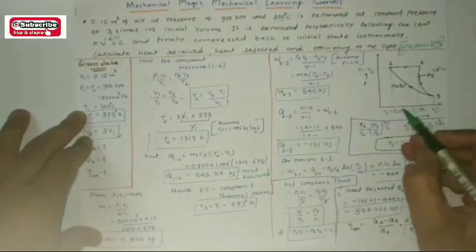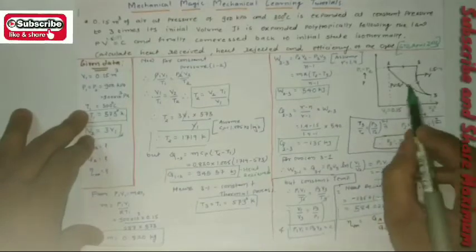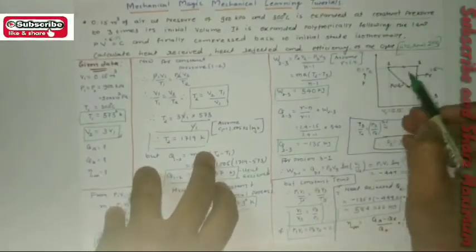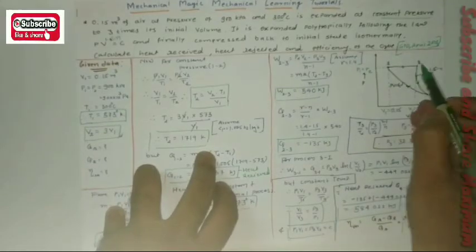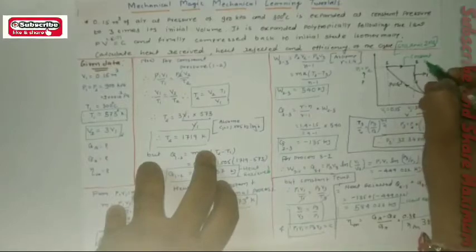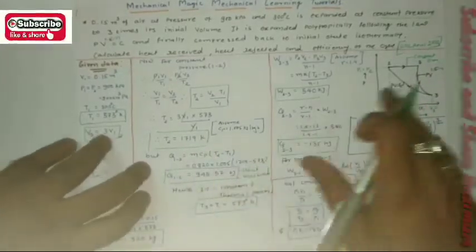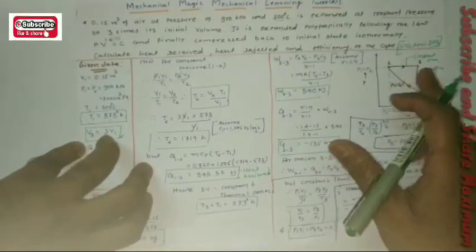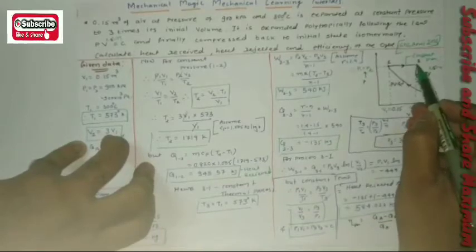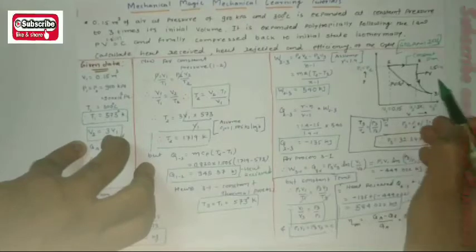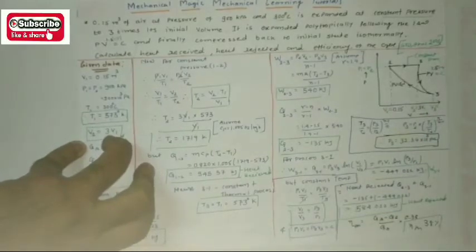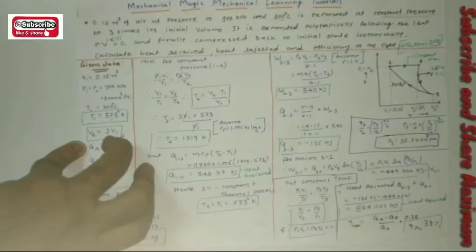Looking at the PV diagram, the X-axis represents V and the Y-axis represents P. From the data, the first process is at constant pressure: point 1 to 2 is an expansion, represented as a constant pressure process. Then the gas is expanded polytropically — from point 2 to 3, following PV^1.5 = constant, representing the polytropic process.